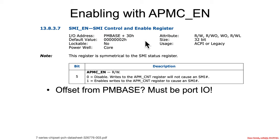Since it's an offset from PMBase, it's going to be port I/O — we saw that in the previous SMI discussion. PMBase plus 60 was port I/O; this is port I/O. PMBase itself is just a port I/O base for power management, and this is indeed power management — Advanced Power Management. So if APMCN is set to 1, then writes to hex B2 will cause an SMI.